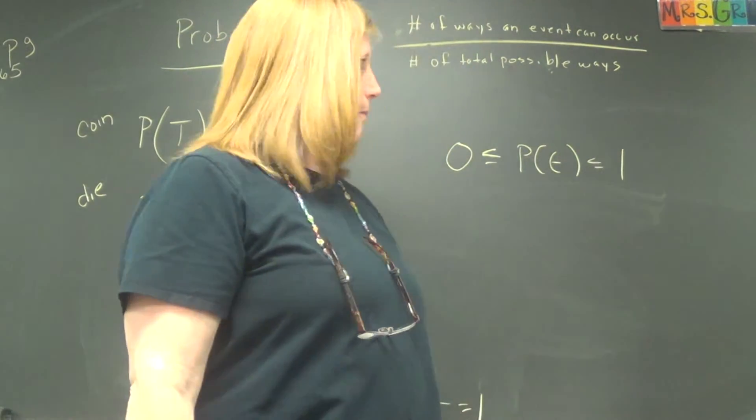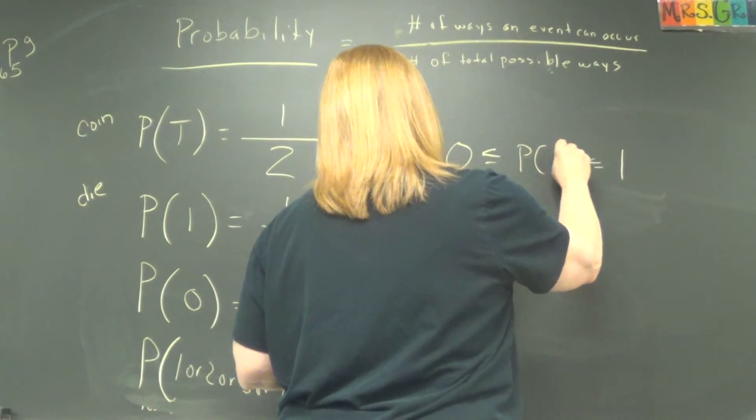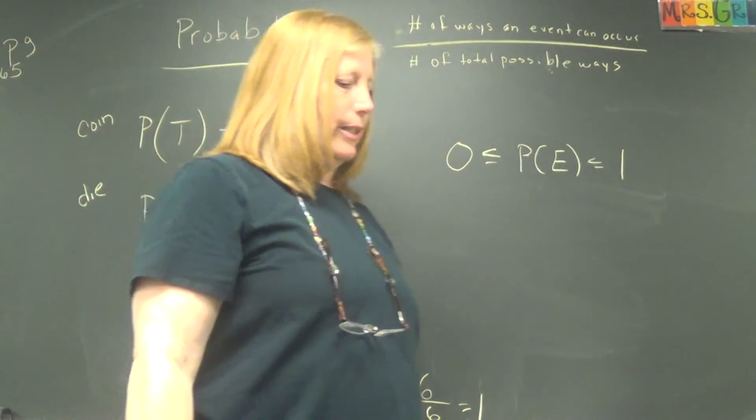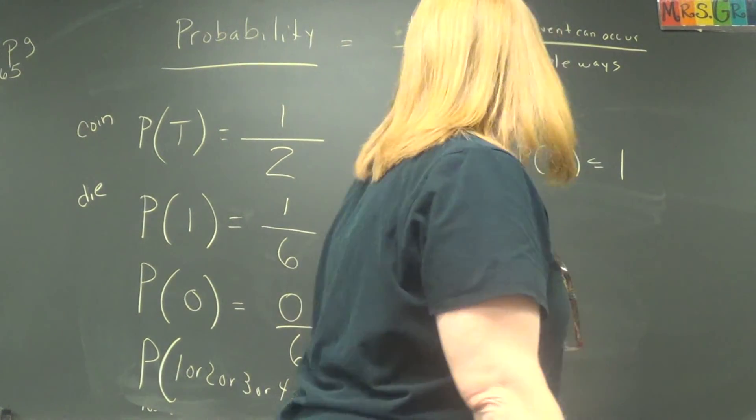What is that letter by P? E, probability of an event. Probability of any event has got to be between zero and one. All right. So try this one. What's the probability?